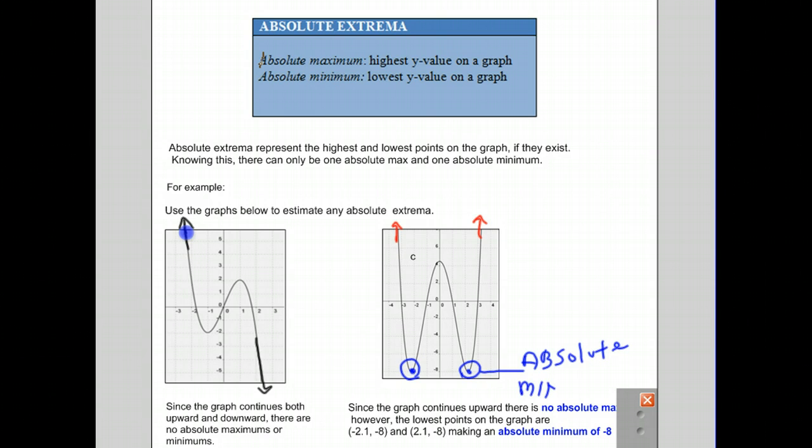The graph never goes below the absolute minimum. There are two points: one at negative 2.1, negative 8, which is right here, and the other one is at 2.1, negative 8, which is right there. So just to reiterate, this graph has no absolute maximum, but it does have an absolute minimum with two points that indicate it.